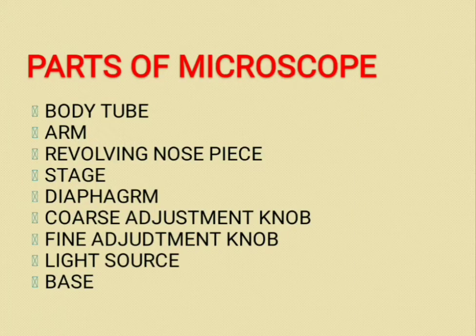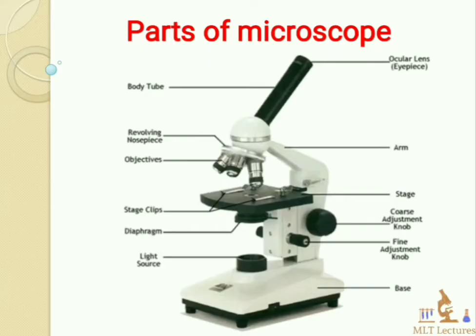Moving towards parts of microscope, it consists of eyepiece, body tube, arm, revolving nosepiece, stage, stage clip, diaphragm, coarse adjustment knob, fine adjustment knob, light source, and base. These are the basic parts of a compound microscope.